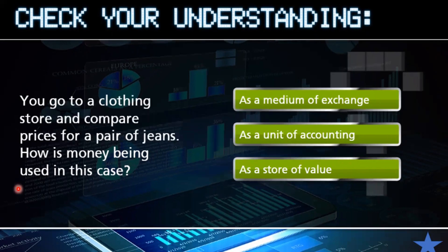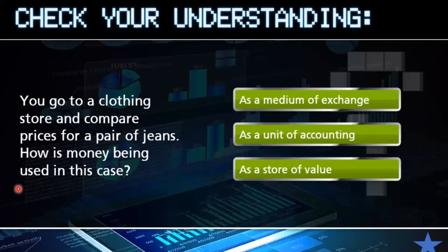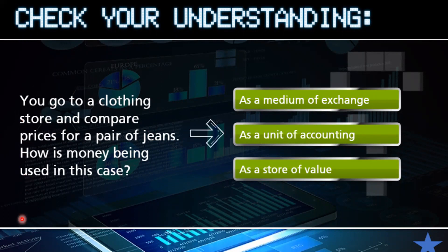Then we have another question: you go to a clothing store and you compare the prices for a pair of jeans. How is money being used in this case? As a unit of accounting, of course, because the key action here is that you're comparing prices. So the answer is number two.